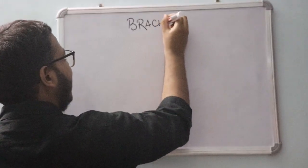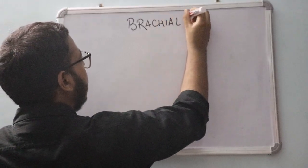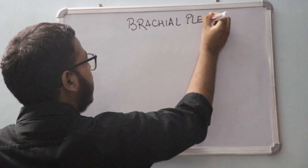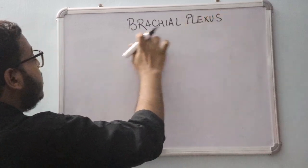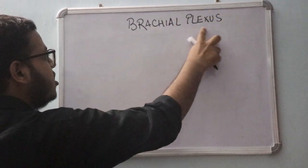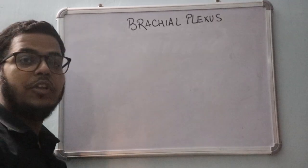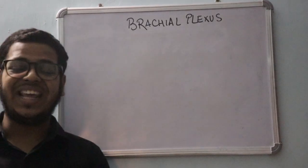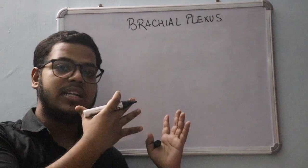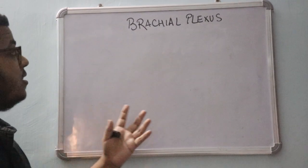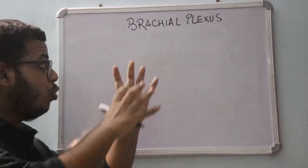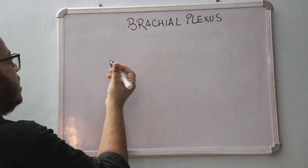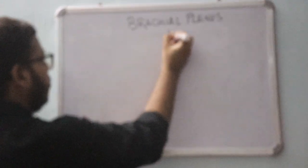The term brachial plexus comes from 'plexus,' which means a union of nerves, and 'brachial' or 'brachium,' which means the arm. So it is the union of nerves that supply the arm or the upper limb. We study it under four segments.